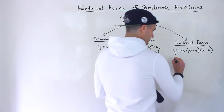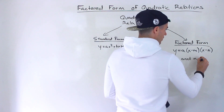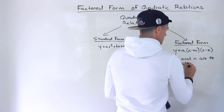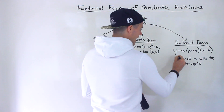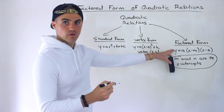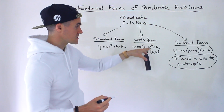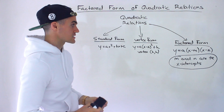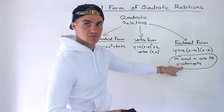The biggest characteristic to take from factored form is the m and n values. What's nice is that m and n are actually the x-intercepts of the quadratic. That's the key characteristic we get from this format. From vertex form we could get the vertex right away — it was just the h and k. With factored form, we're going to be able to get the x-intercepts right away.